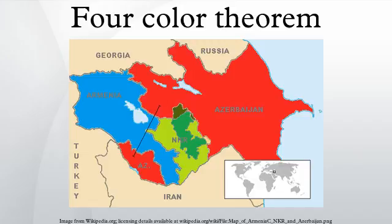For example, in the map of the United States of America, Utah and Arizona are adjacent, but Utah and New Mexico, which only share a point that also belongs to Arizona and Colorado, are not. Despite the motivation from coloring political maps of countries, the theorem is not of particular interest to map-makers. According to an article by math historian Kenneth May, maps utilizing only four colors are rare, and those that do usually require only three. Books on cartography and the history of map-making do not mention the four-color property.